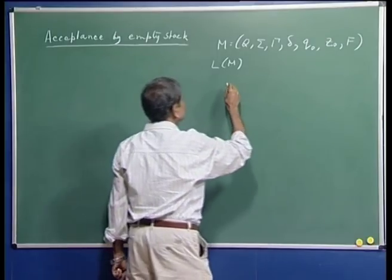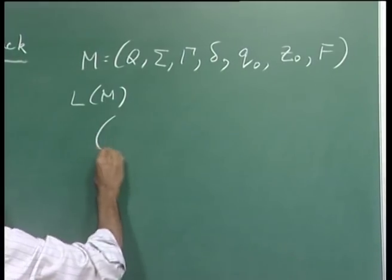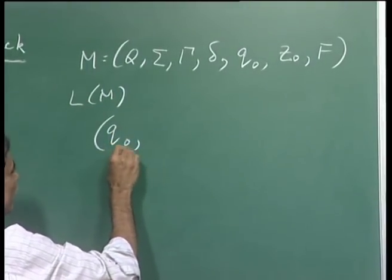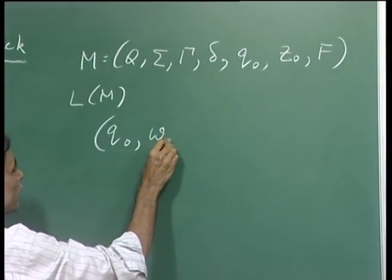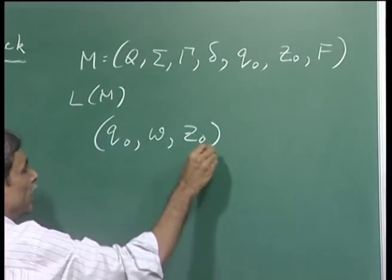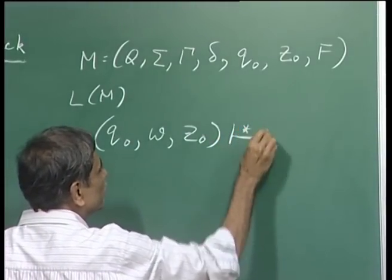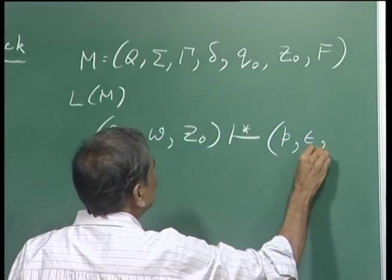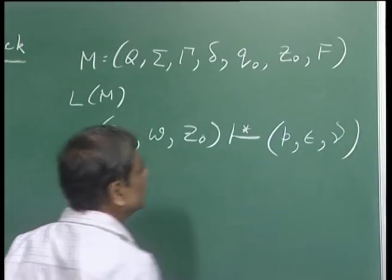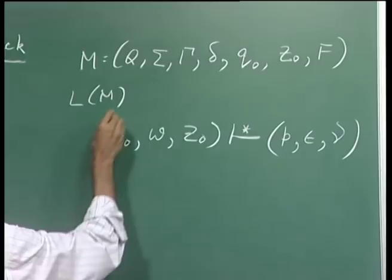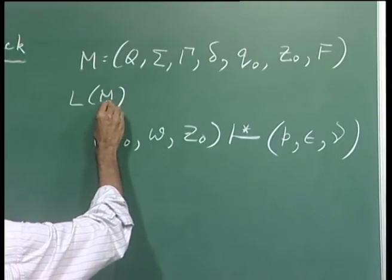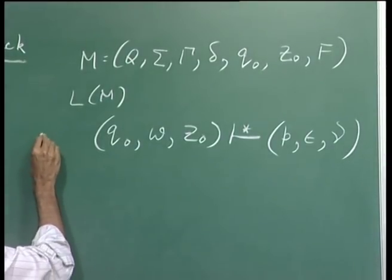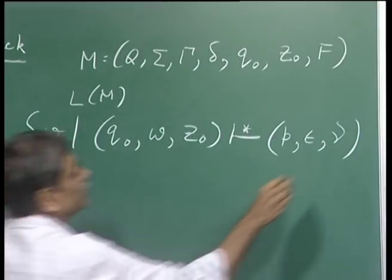In terms of instantaneous descriptions, a string W is in the language provided the initial ID Q0, W, Z0 can reach some state P with epsilon remaining in the input after some computation steps, and we do not care what the stack contains at that time. So the language accepted by M by final state is the set of all strings W such that this condition holds.